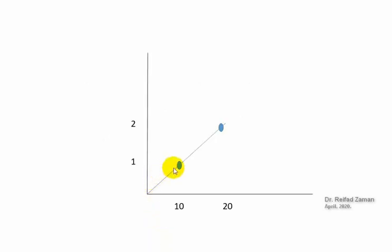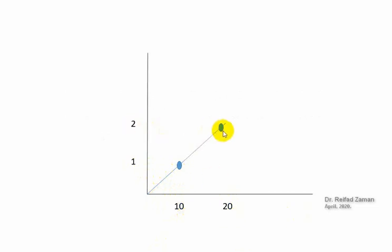Let's look at this graph for example. Here we can see that at 10 degrees centigrade, the rate of reaction was 1 unit. And at 20 degrees centigrade, the rate of reaction was 2 units. So we can say that for a 10 degree change in temperature, the rate of reaction increased 2 times.